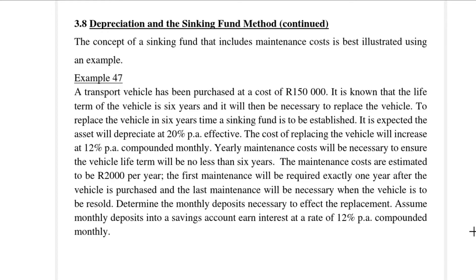Yearly maintenance costs will be necessary to ensure the vehicle life term will be no less than six years. The maintenance costs are estimated to be 2,000 rands per year. The first maintenance will be required exactly one year after the vehicle is purchased, and the last maintenance will be necessary when the vehicle is to be resold. Determine the monthly deposits necessary to effect the replacement. Assume the monthly deposits into a savings account earn interest at a rate of 12% per annum compounded monthly.